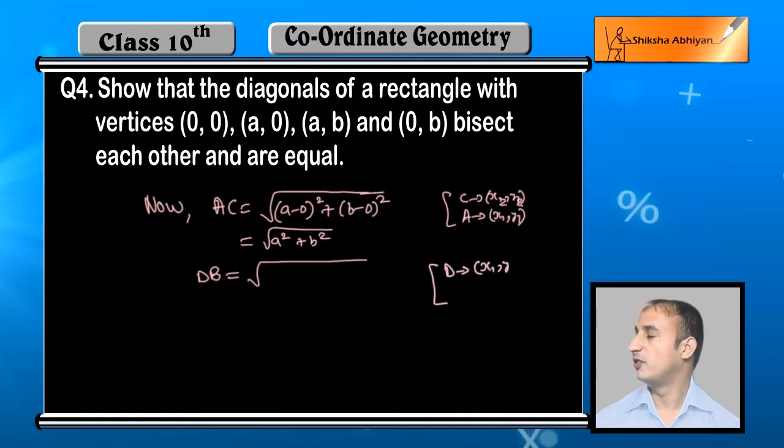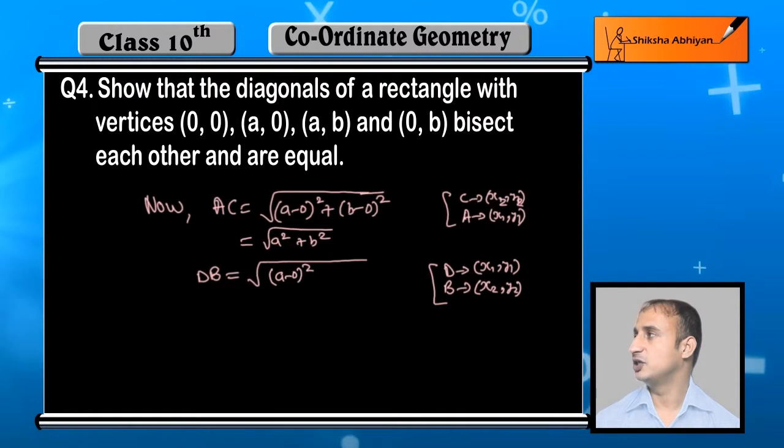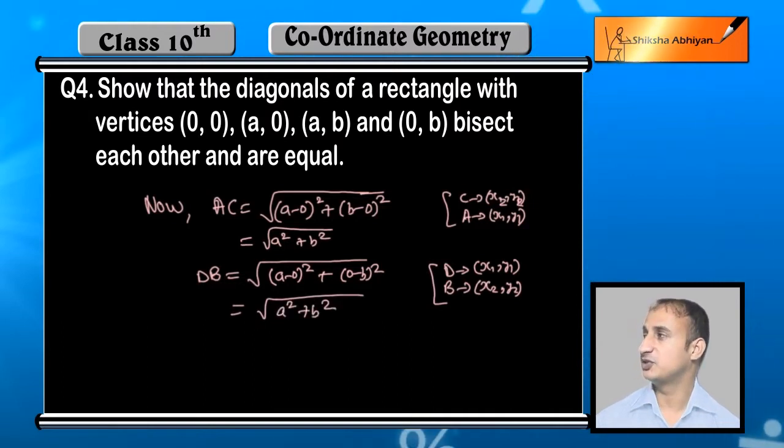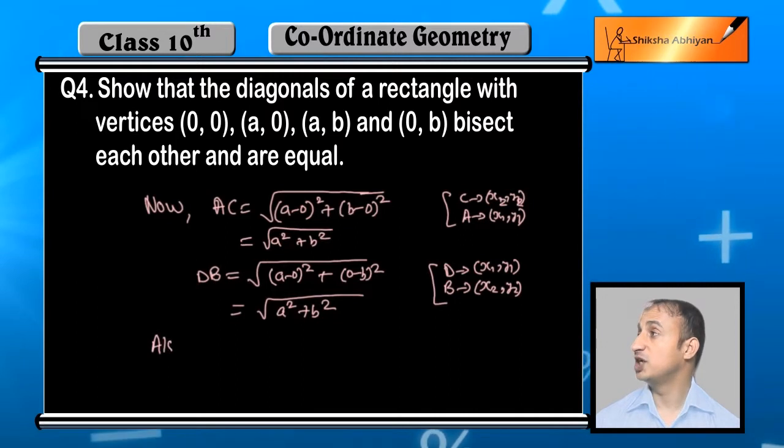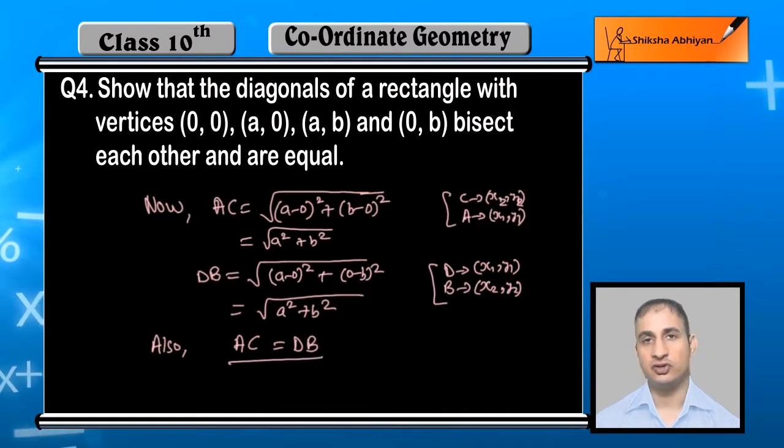Now for DB, we apply the distance formula: (x2-x1)² + (y2-y1)². So (a-0)² + (0-b)². This gives a² + b². So AC = √(a²+b²). DB = √(a²+b²). Both diagonals are equal. Therefore both diagonals are also equal.